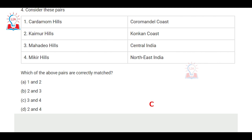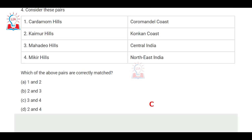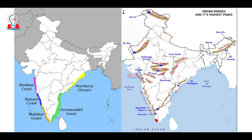The second pair — Kamur Hills and Konkan Coast — is also incorrect. Kamur Hills is basically an extension of the Vindhya range that extends all the way to Bihar, and is not part of the Konkan Coast, which is situated in Maharashtra and Goa on the western side.